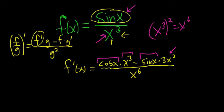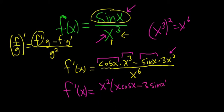To finish, maybe simplify this. We can factor out an x squared from the numerator, so let's do that. This is x squared, parentheses x, cosine x, minus 3, sine x. I think I did that right. Let's see, so x squared times x is x cubed. Yep, yep, looks okay.